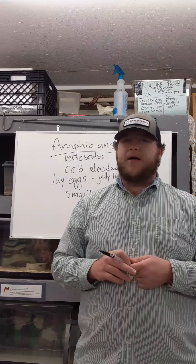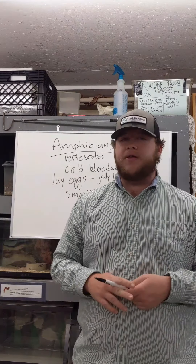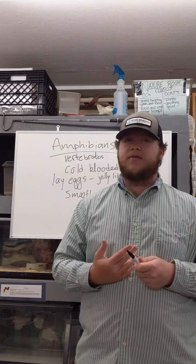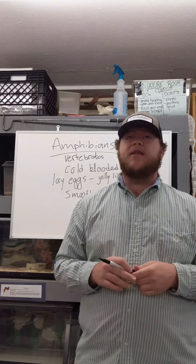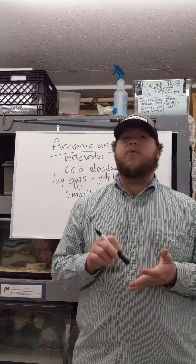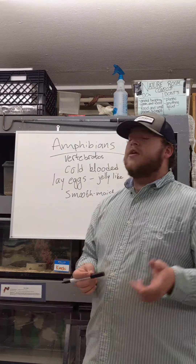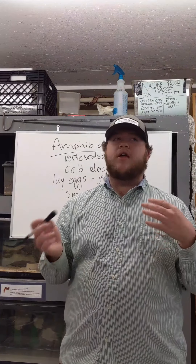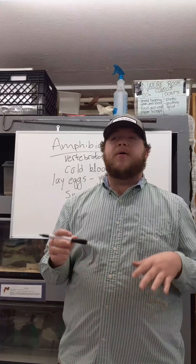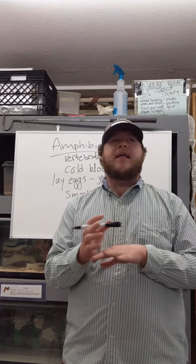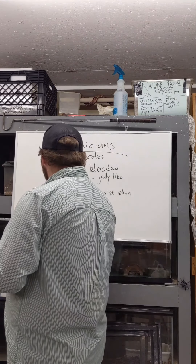Another thing to think about when considering amphibians is where they live. When we think about the word 'amphibious,' which is a derivative of 'amphibian,' amphibians are found on land and water. That makes a lot of sense because you can find frogs in the water or on land. A lot of times with amphibians, they spend one part of their life cycle in or near water and another part on land, or the other way around.